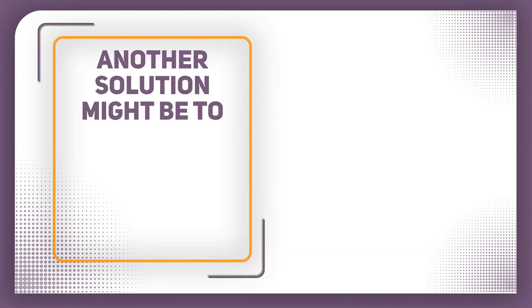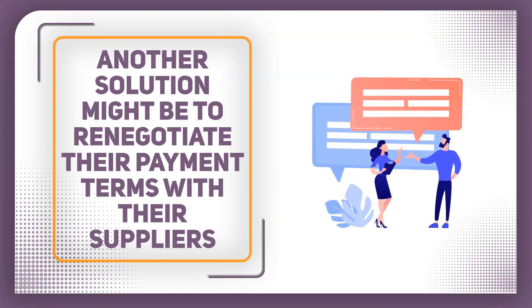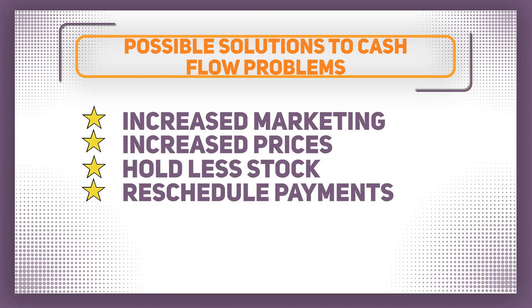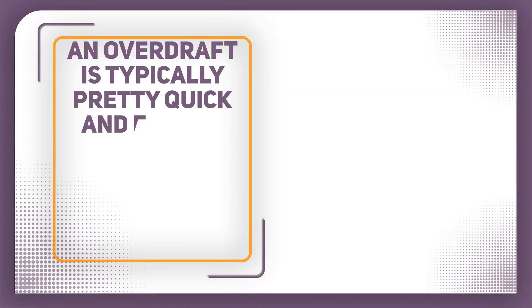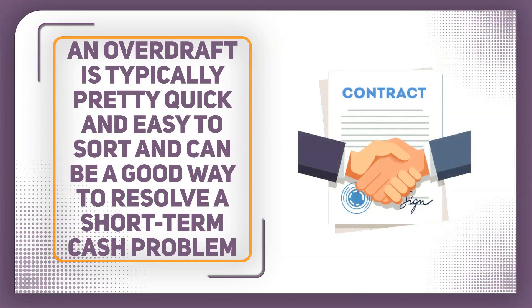Another solution might be to renegotiate payment terms with their suppliers — for example, by increasing the days that they have to pay their invoices or asking for a one-off delay to help them through a difficult month. However, this could damage the relationship with the supplier, so it needs to be handled carefully. Finally, they may also have to look at other sources of finance. An overdraft is typically quick and easy to sort out and can be a good way of resolving a short-term cash problem. However, the interest rate can be much higher than a bank loan, and if the business is persistently overdrawn it might affect their credit rating and ability to solve future cash flow problems.